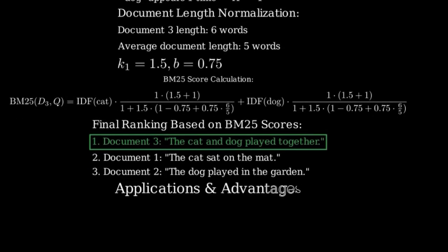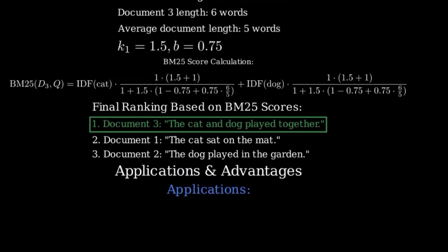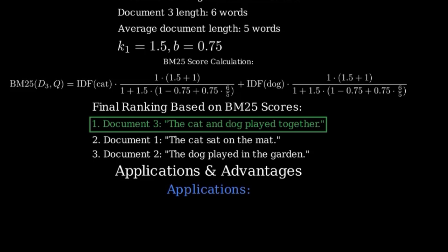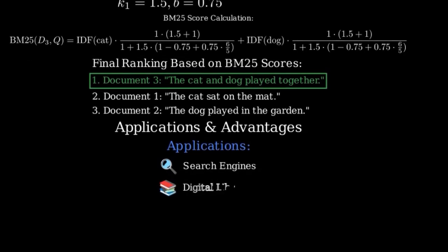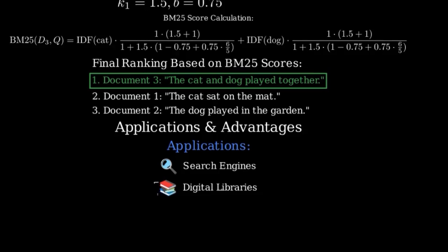BM25 is widely used in information retrieval systems due to its effectiveness in ranking documents based on their relevance to a search query. Here are some applications and advantages of BM25. Search engines: BM25 powers many modern search engines, helping users find the most relevant documents. Digital Libraries: It helps quickly locate relevant research papers and books. Enterprise Search: Companies use it to search through their internal documents and knowledge bases.